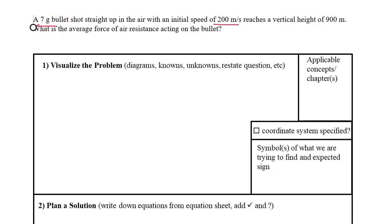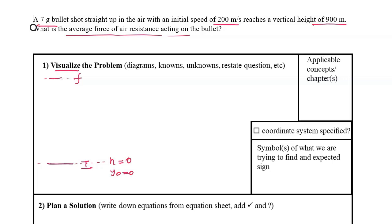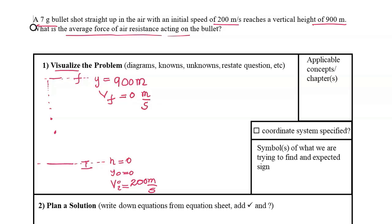A 7 gram bullet is shot straight up in the air with an initial speed of 200 meters per second and reaches a height of 900 meters. We are asked to calculate the average force of air resistance acting on the bullet. I'm going to start by visualizing the problem and identifying the initial and final states. The initial height is zero, the final height is 900 meters, the initial velocity is 200 meters per second, and the final velocity is zero.